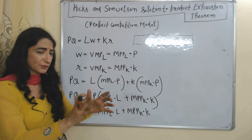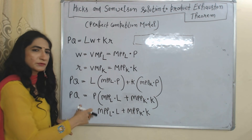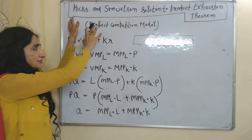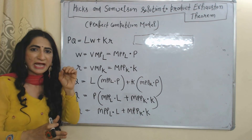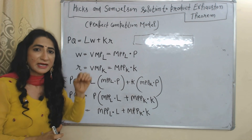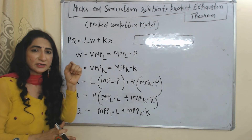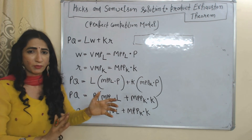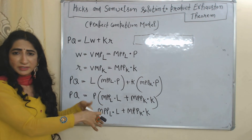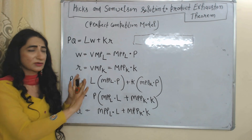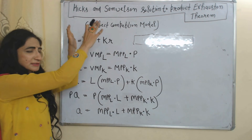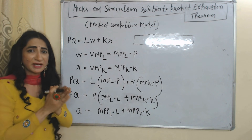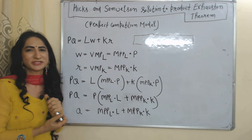According to this equation, if we pay factors of production just equal to their marginal product, then total output will be exhausted. According to Hicks and Samuelson, this situation is only applicable under perfect competition in the long run when the firm is just receiving normal profit. So this is all about the Product Exhaustion Theorem. Thank you so much for watching this video.